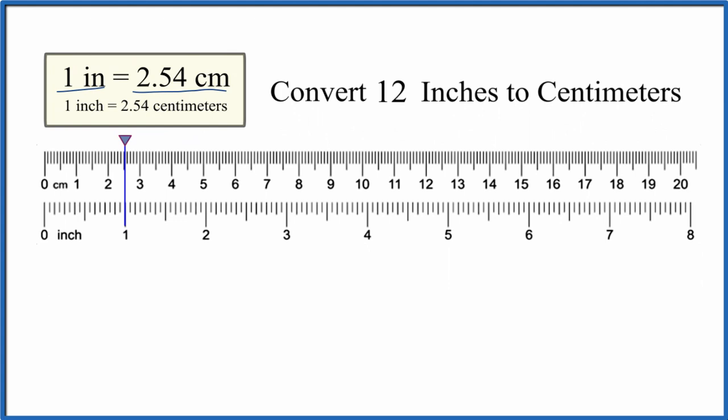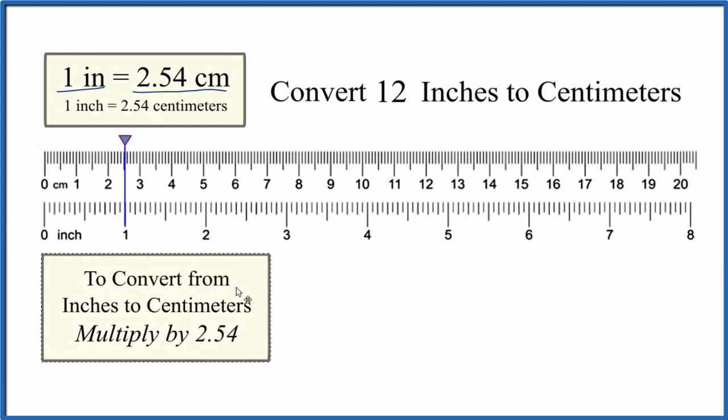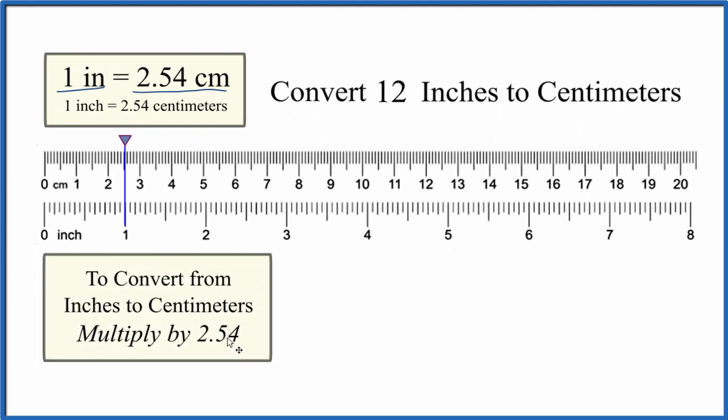So if we want to convert from inches to centimeters, what we do is we multiply the inches times 2.54. That gives us centimeters. So we take our 12 inches, we multiply the 12 inches by 2.54, and that's 2.54 centimeters in 1 inch.